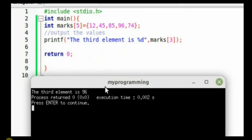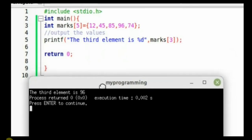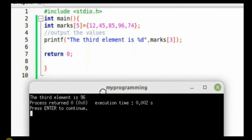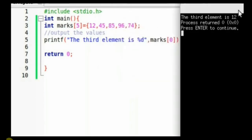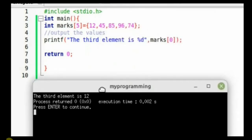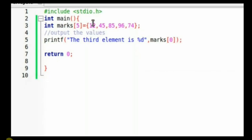The implication here is if you're trying to output the element with subscript 3, you're going to get 96. What if we change it to 0? We're going to get the very first element of that particular array. That is marks subscript 0, which is equivalent to the 12 value that we've got there.